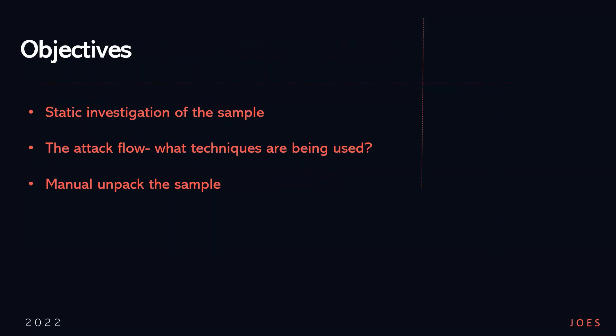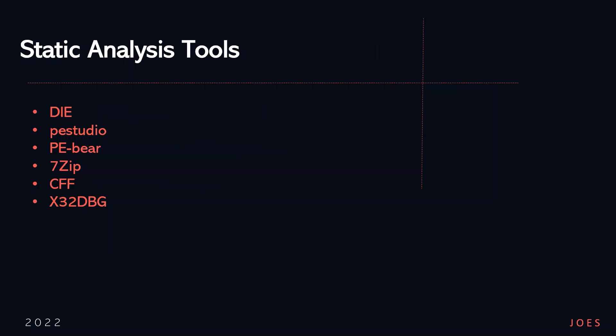We begin with a quick overview of the malware to understand some of the techniques it uses. We'll study the static properties of the file and get a better understanding of the file sections and entropy level. At the final stage, we'll unpack the file and use the strings to identify the malware family. The tools I'm going to use today are: Detect It Easy, PE Studio, PBEAR, 7-Zip, CFF Explorer, and a debugger.